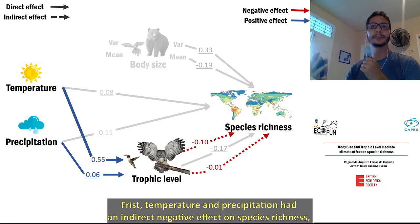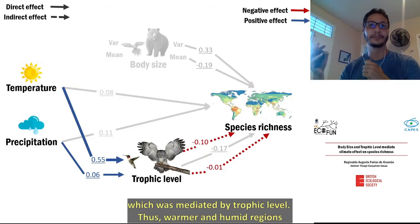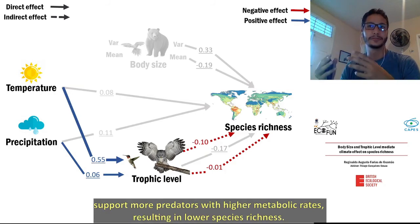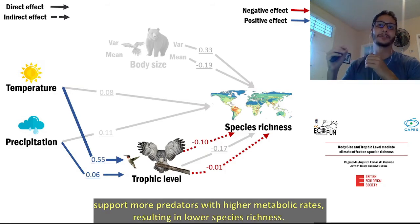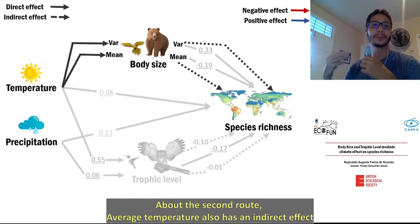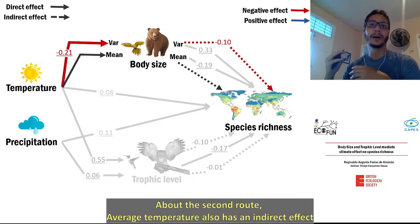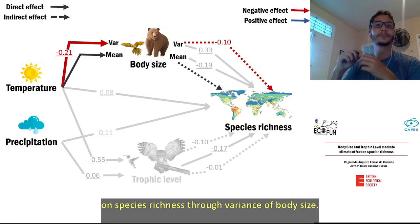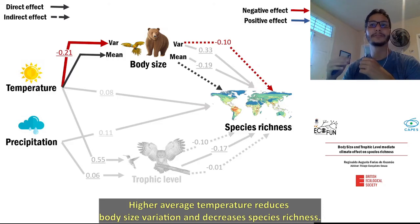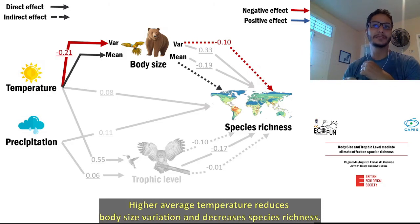Temperature and precipitation had an indirect negative effect on species richness, which was mediated by the trophic level. Thus, warm and humid regions support more predators with high metabolic rates, resulting in lower species richness. Average temperature also has an indirect effect on species richness through variance of body size. In other words, high average temperature reduces body size variance and decreases species richness.